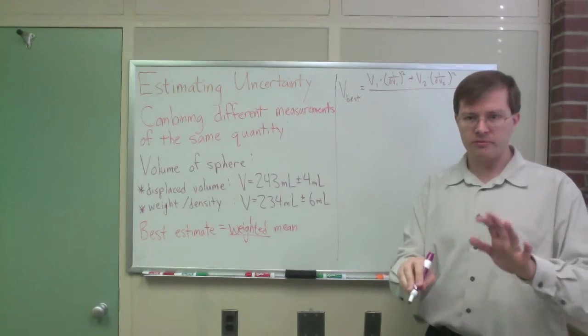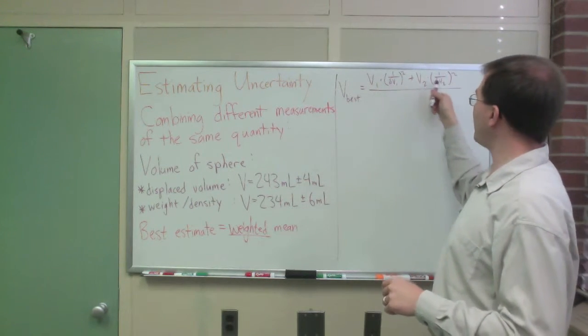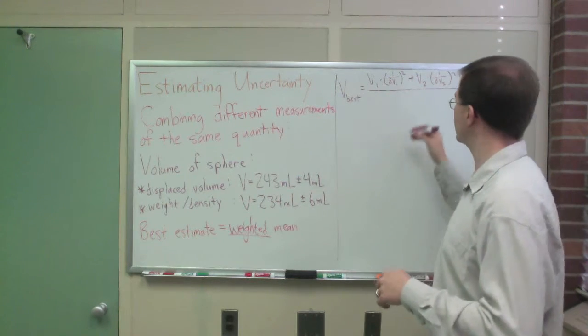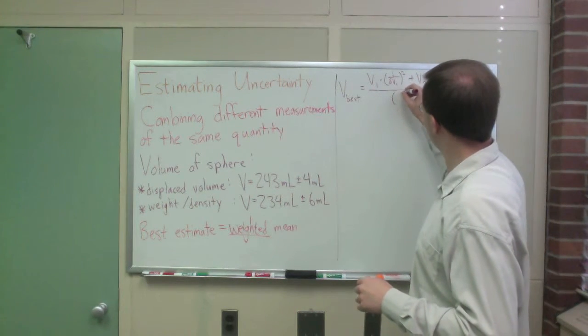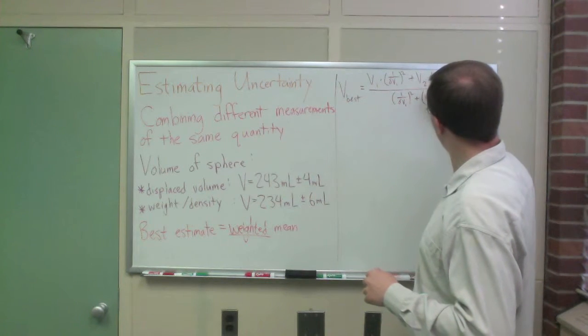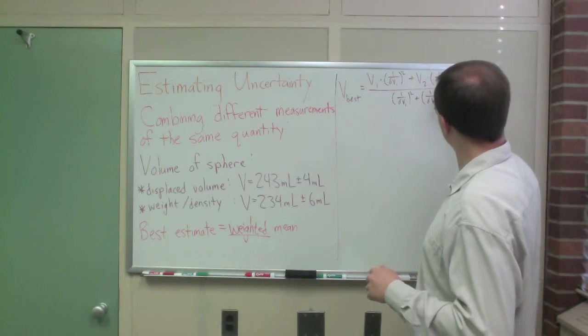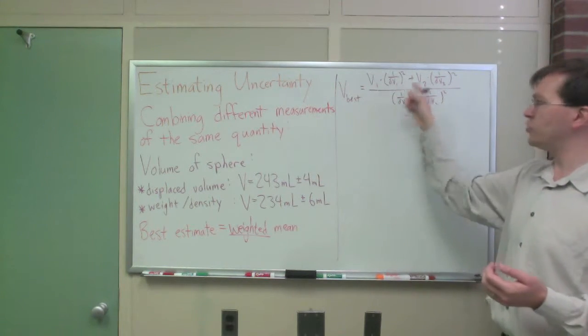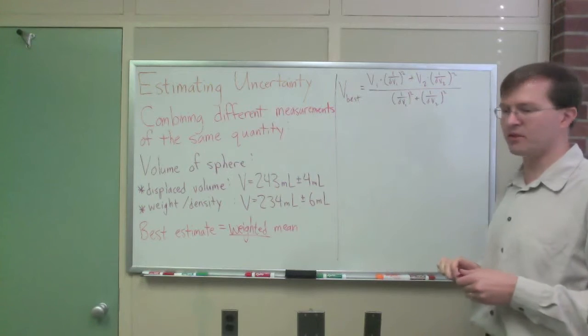Right now, the units on this are terrible, but bear with me. We have to divide by the sum of the weighting factors to get ourselves back into the right sort of normalization. So we're just going to divide by 1 over delta V1 squared plus 1 over delta V2 squared. That's the equation we use to combine two different measurements and find the best estimate of the mean.